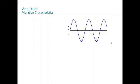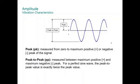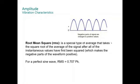For amplitude, there are three different measurements: peak-to-peak, peak, and RMS. Peak is the measurement from zero to the maximum positive or maximum negative of the signal. Peak-to-peak is from the maximum positive to the maximum negative. The RMS is a special type of average that takes the square root of the average of the signal. For a perfect sine wave, RMS is 0.707, only in this case of perfect sinusoidal.